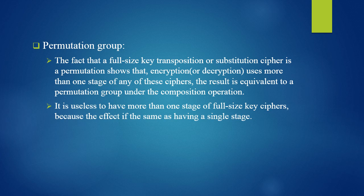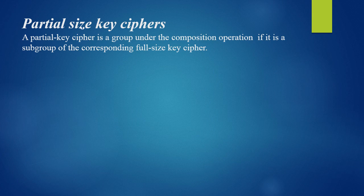Coming to partial-size key ciphers: as the name suggests, a partial-size key cipher's key does not generate all possible mappings but only a few of them. A partial-size key cipher is a group under the composition operation if it is a subgroup of the corresponding full-size key cipher. Therefore, it is not necessary for it to achieve the same mapping through composition as the full-size key cipher.